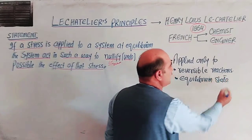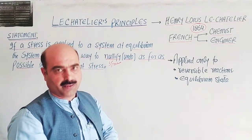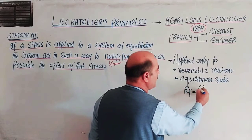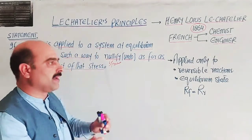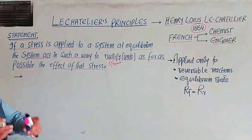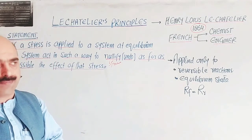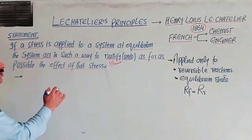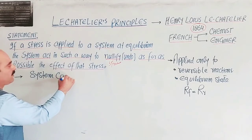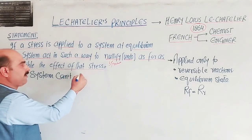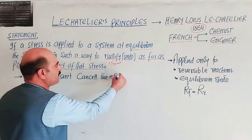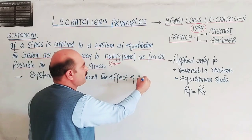The equilibrium state exists only in a reversible process. In the equilibrium state, the rate of the forward reaction equals the rate of the reverse reaction. Importantly, the system cannot completely nullify or cancel the effect of the change — it can only minimize it as far as possible.